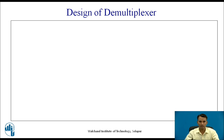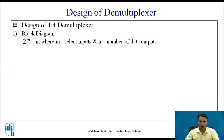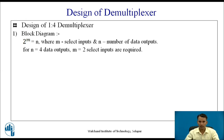Now let us see the design of a demultiplexer with an example of a 1-to-4 demultiplexer. The very first step is to draw the block diagram. We have a single data input and 4 output lines. To find how many select inputs are required, we use the formula 2^m = n, where m is the number of select inputs and n is the number of data outputs. For a 1-to-4 demultiplexer, n is 4, so we require 2 select inputs, meaning m becomes 2.